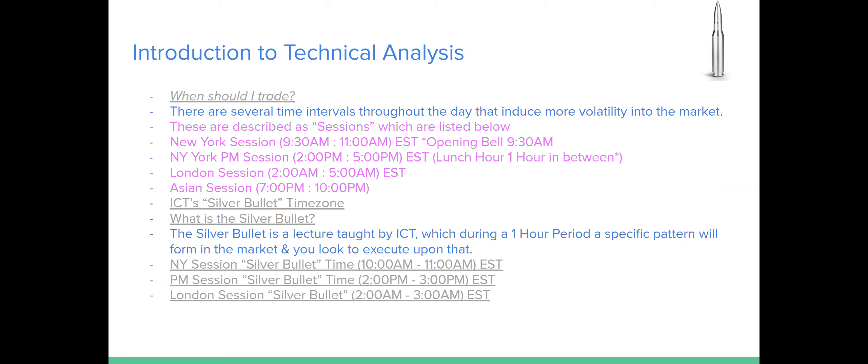There are two sessions: the a.m. session I mentioned, and a p.m. session from 2:00 p.m. to 5:00 p.m. Eastern Standard Time. There's something called the lunch hour — in between the New York a.m. and p.m. sessions — a one-hour interval where you typically don't want to be trading because price action can be a little dull and lethargic. There's also the London session from 2:00 a.m. to 5:00 a.m. Eastern Standard Time — typically overnight for U.S. traders. The Asian session runs from 7:00 p.m. to 10:00 p.m. Eastern Standard Time. You can pick and choose which ones fit your schedule.